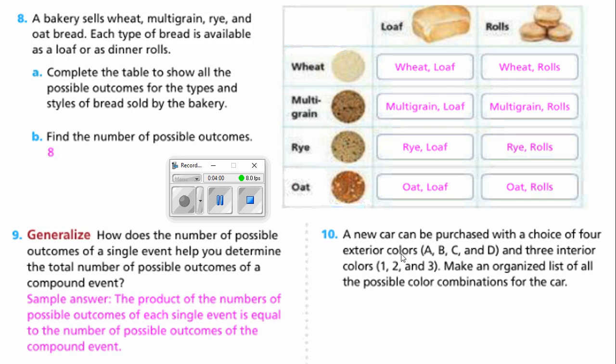Number 10, a new car can be purchased with a choice of 4 exterior colors: A, B, C, or D. Those are the 4 different colors and 3 interior colors: 1, 2, and 3. Make an organized list of all the possible color combinations.